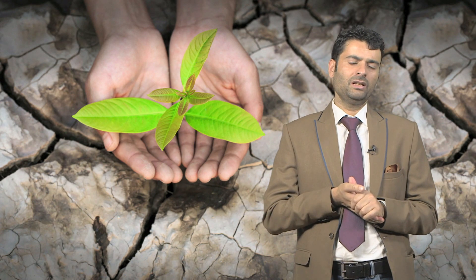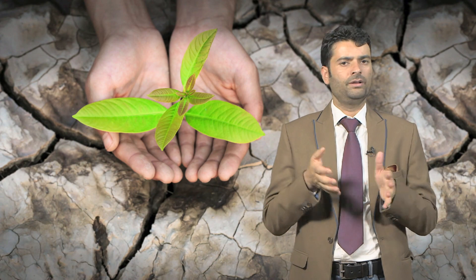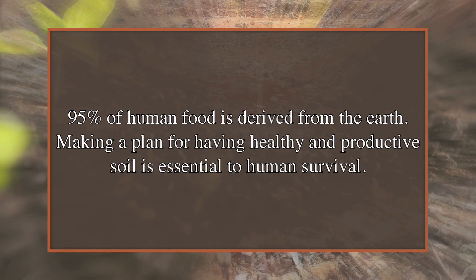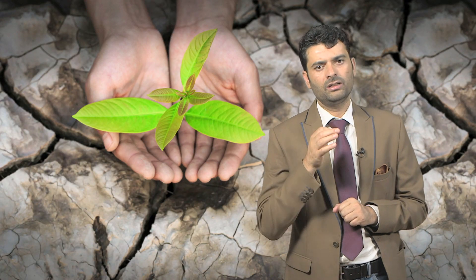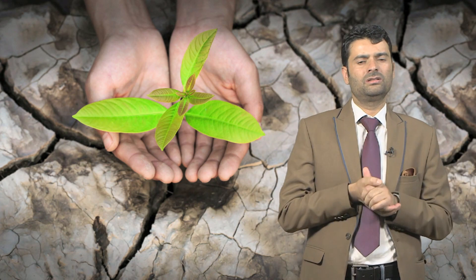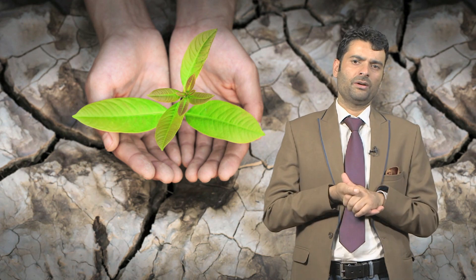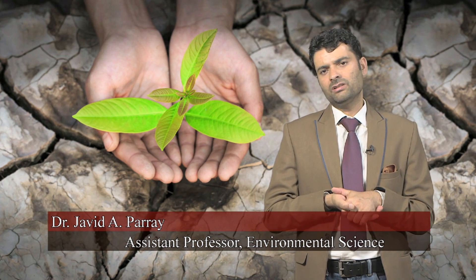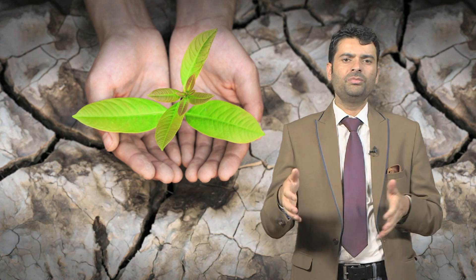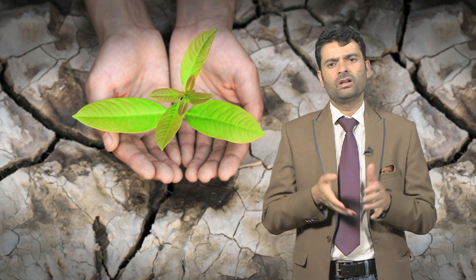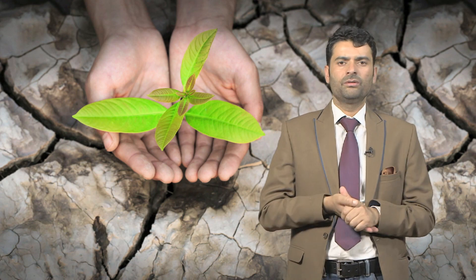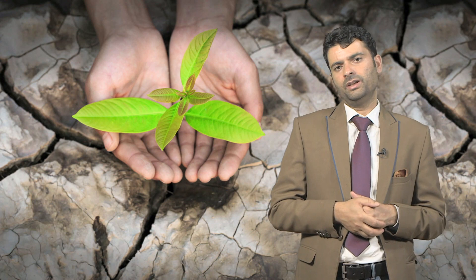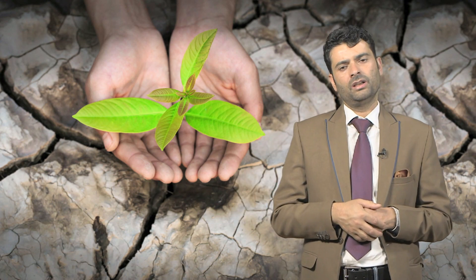Life and living on the planet would be impossible without healthy soil. 95% of human food is derived from earth. Soil is the thin layer of organic and inorganic materials that covers the earth's rocky surface. The organic portion, derived from decayed remains of plants and animals, is concentrated in the dark uppermost topsoil. The inorganic amount, made up of rock fragments, was formed over thousands of years by physical and chemical weathering of bedrock.